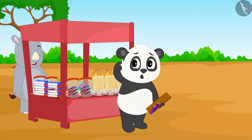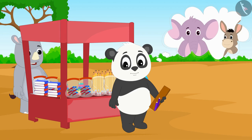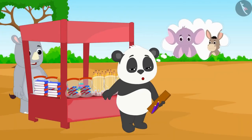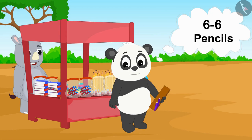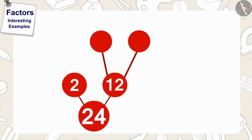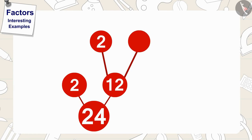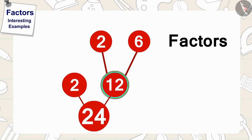Now Golu is wondering if his two friends will also be able to divide their 12 pencils among two more friends. His friends can divide their 12 pencils equally by giving 6 pencils to each of their two friends. Golu made 2 lines from 12 and made 2 circles at the other end, writing 2 in one circle and 6 in the other. Golu has written 2 factors of 12.